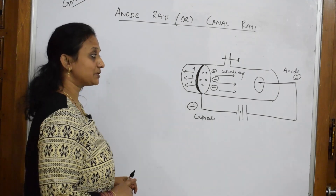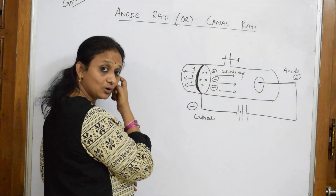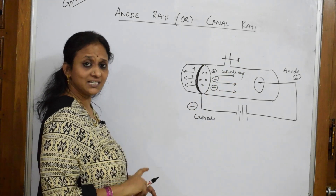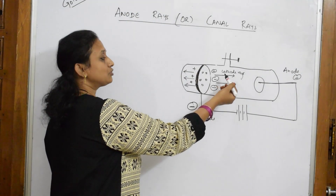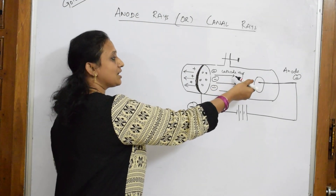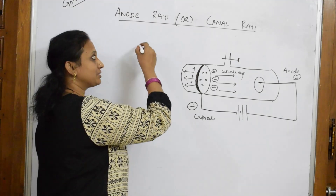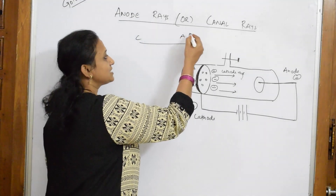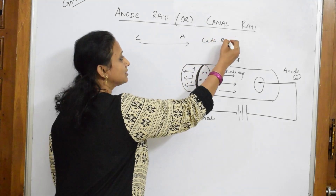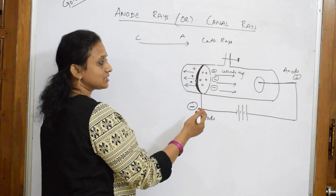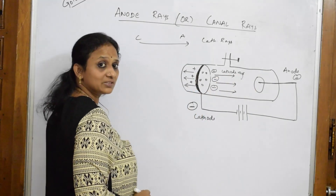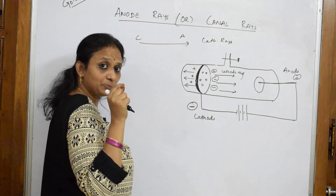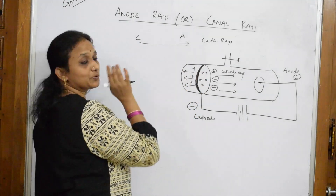When he used this perforated cathode electrode and filled the tube with a certain amount of gas, he observed certain scintillations that traveled toward the cathode. Earlier, cathode rays traveled from cathode to anode. But here, he observed that while cathode rays moved in that direction, certain rays moved toward the cathode and through the perforations, traveling in the opposite direction.